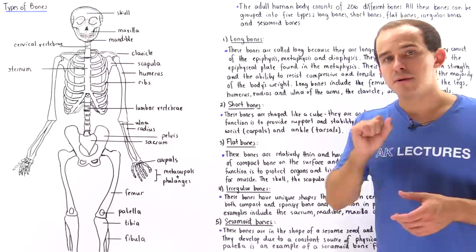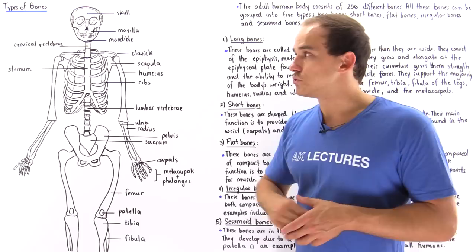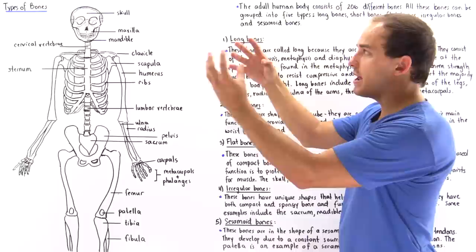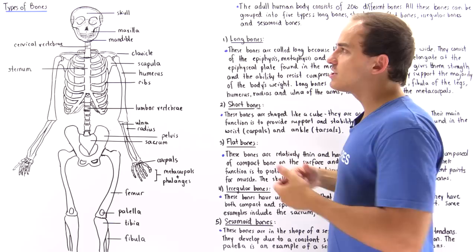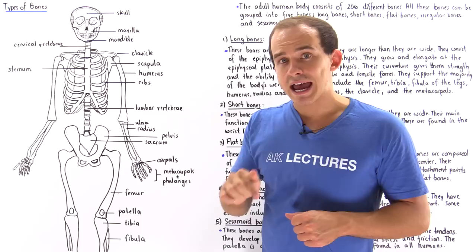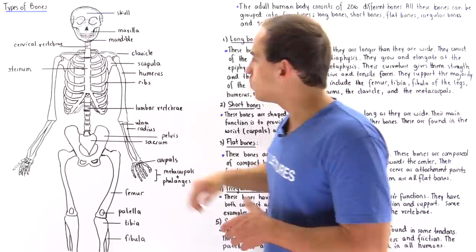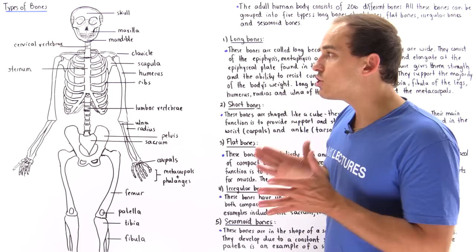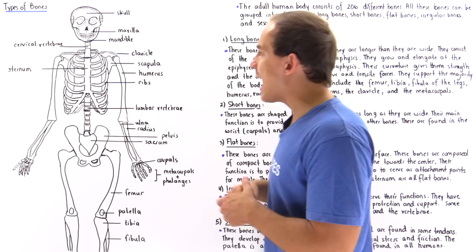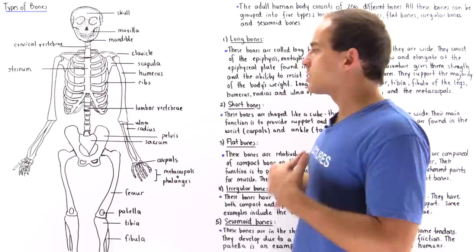The skull, or cranium, is an example of flat bones. Many of these flat bones fuse together as the organism becomes an adult, and they serve to protect the brain. Other examples of flat bones include the ribcage and the sternum, which act as attachment points for muscles and protect the heart, lungs, and vascular tissue in that region.